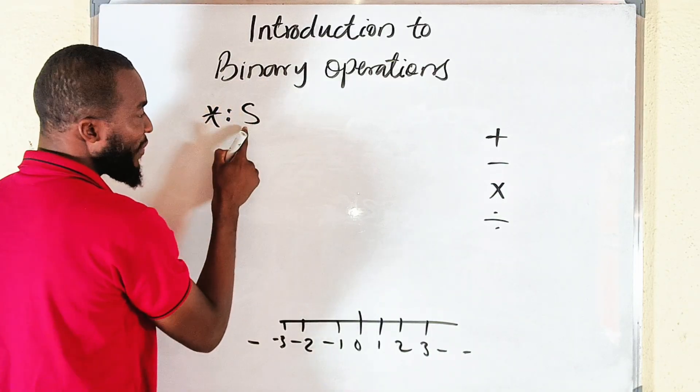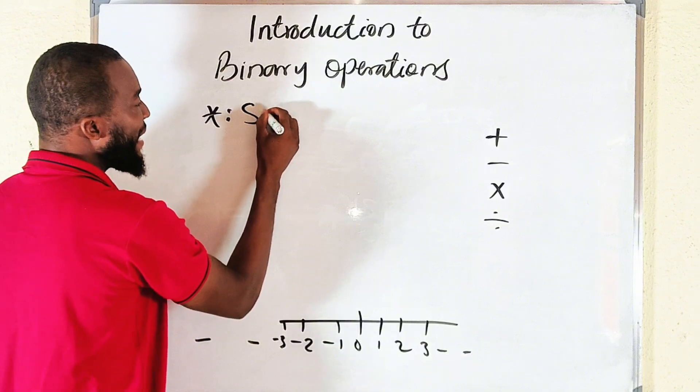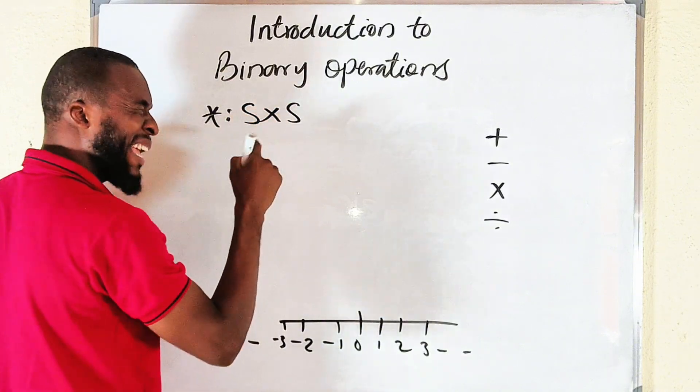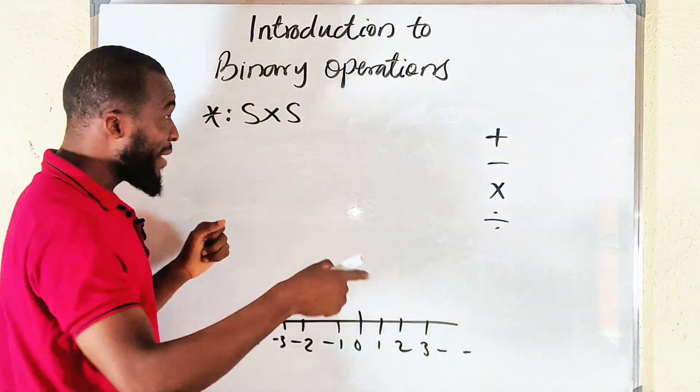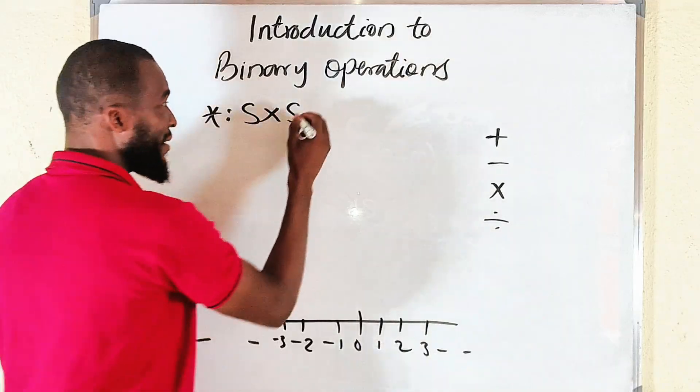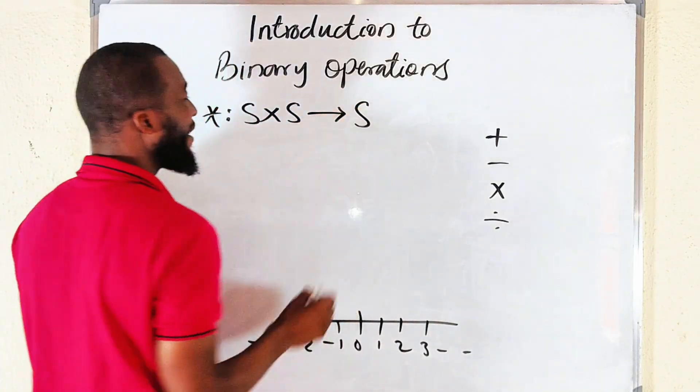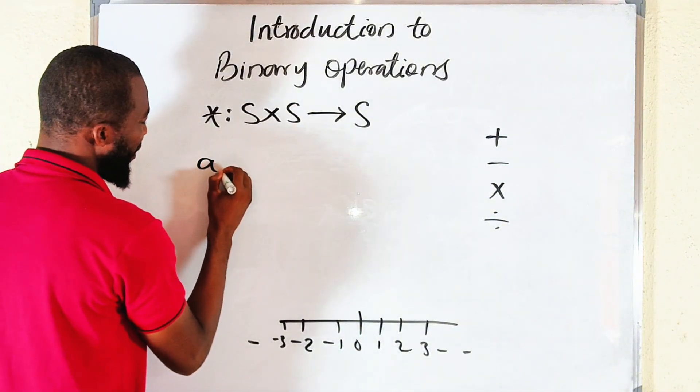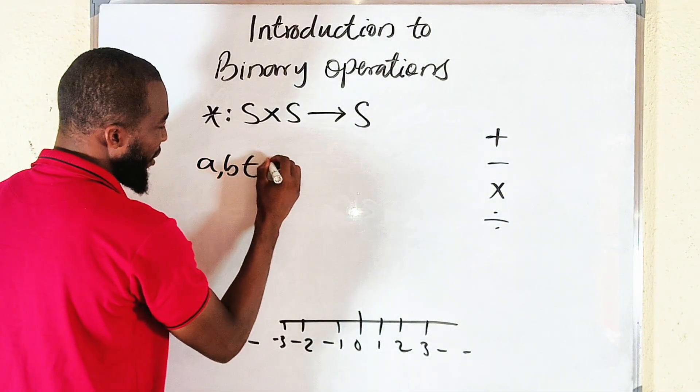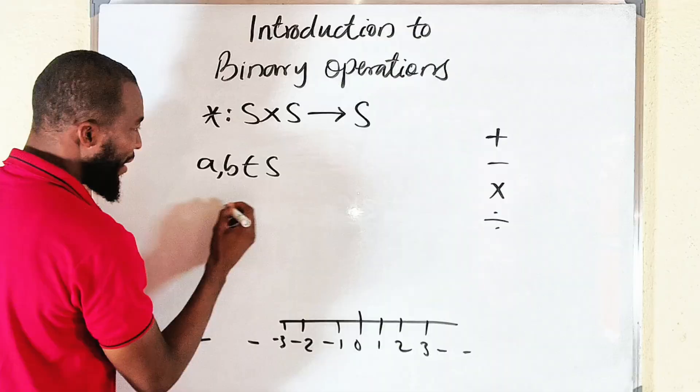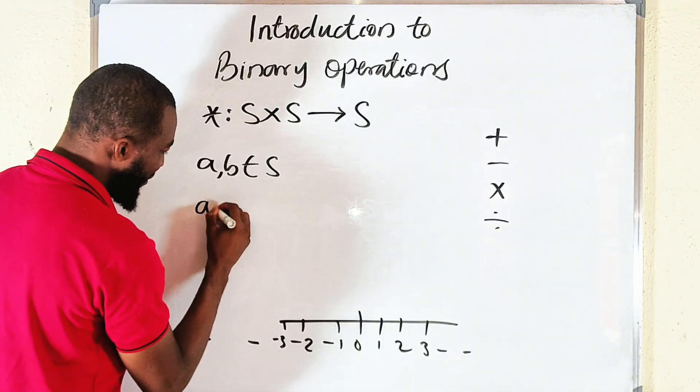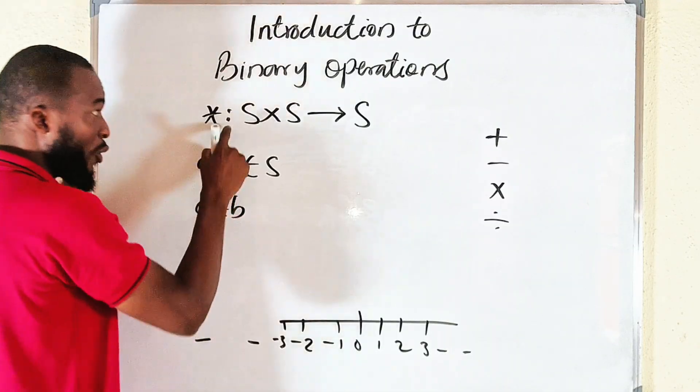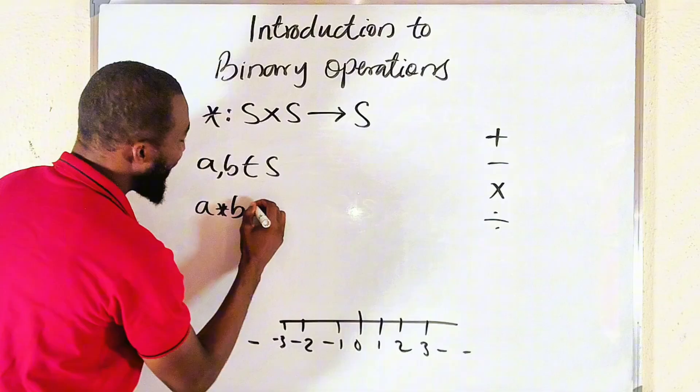If you take a binary operation, it must take an element from a given set S, link it or connect it with another entirely different element from that same set, and it must produce another element within the set. So if I take, for instance, a, b that belongs to the set S, I let them a asterisk b, which is the operation I'm talking about here.